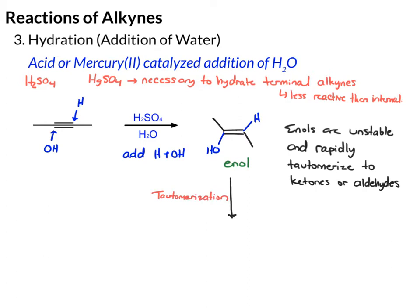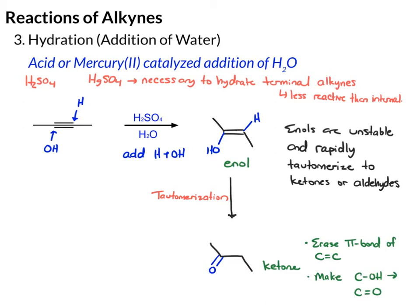The simple way to draw the tautomer product is to draw the main carbon framework — so there are four carbons in the chain — then eliminate the double bond and turn the OH into a double-bonded oxygen. So in this case we end up with a ketone. The general rule: erase the pi bond of C=C and make the C–OH bond a C=O.